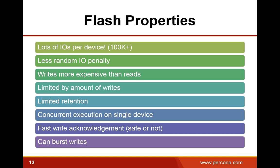Now, what about flash properties compared to hard drives? Flash devices have much, much more input operations per device. Where a normal hard drive handles maybe a couple hundred random IOs every second, flash can do hundreds of thousands at the high end, and even relatively low-end consumer devices can handle tens of thousands of IOs per second. There is a lot less random IO penalty — accessing data randomly is not as expensive.